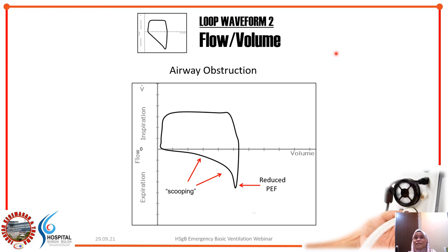What can you learn from the flow-volume curve? First, you can determine whether there is airway obstruction — just like in spirometry. A scoop in the expiratory limb of the loop indicates obstruction. You need to figure out the cause: it could be secretions requiring suctioning, bronchospasm requiring bronchodilators, patient biting the tube requiring more sedation, or a disease process like emphysema.